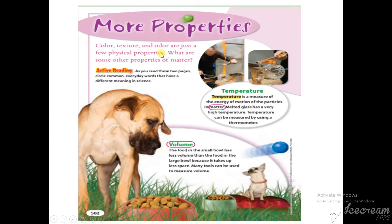Now, more properties. Other than color, texture, and odor, there are a few physical properties. When we come to more physical properties, they're saying: as you read these two pages, circle common everyday words that have a different meaning in science — matter and volume. Circle these and please don't forget to highlight the vocabulary words.